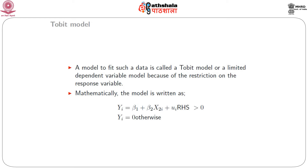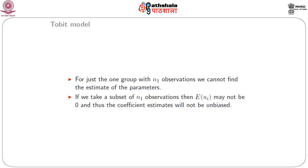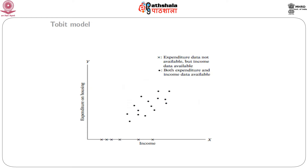Because of restrictions on the values of the regressant, this is called a limited dependent variable model. Mathematically, the Tobit model is: yᵢ = β₁ + β₂x₂ᵢ + u₂ᵢ if the right-hand side is greater than 0, and yᵢ = 0 otherwise. We cannot estimate the regression using just n₁ observations from the first group, because if only n₁ observations are used, E(uᵢ) may not be 0, and without E(uᵢ) = 0 the coefficient estimates cannot be proved unbiased. Our goal is to find a BLUE — the best linear unbiased estimator with minimum variance.